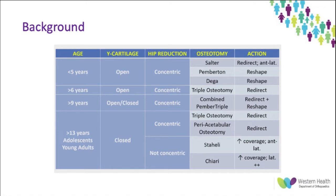Basic management of early infantile hip dysplasia includes things like bracing using Pavlik harnesses, closed and open reductions, and femoral and acetabular osteotomies. In older children, various osteotomies — either volume reducing, redirectional, or salvage osteotomies — can be performed to also try and correct deformity. We won't go into too much detail regarding these procedures as we'll be focusing on the period after the remodeling potential and before degenerative change.